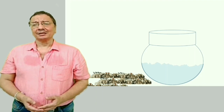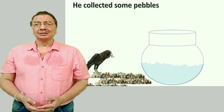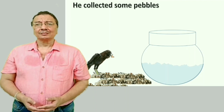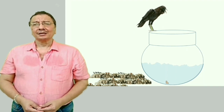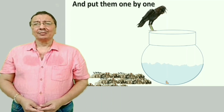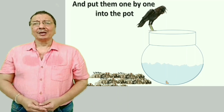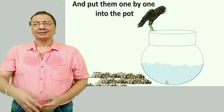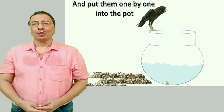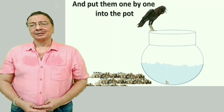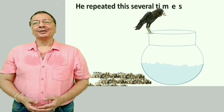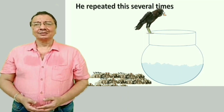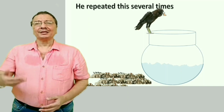Usne kuch kankar jama kiye — He collected some pebbles. 'Pebbles' means kankar/sankar. 'Collected' means jama karna. And put them one by one into the pot — aur ek ek karke matke ke andar daale. 'One by one' means ek ek karke. 'Put' means daalna. He repeated this several times — usne yah kriya kai baar dohraayi. 'Several' means anek baar. 'Repeat' means dohraaana.